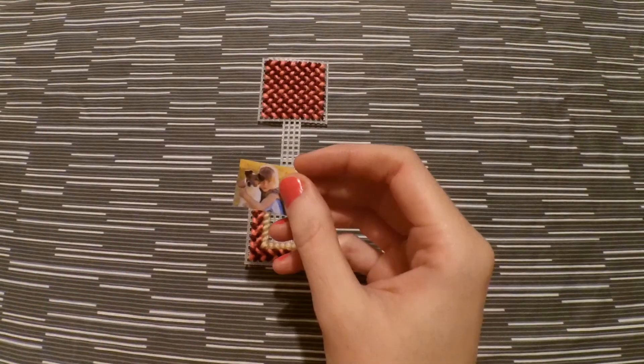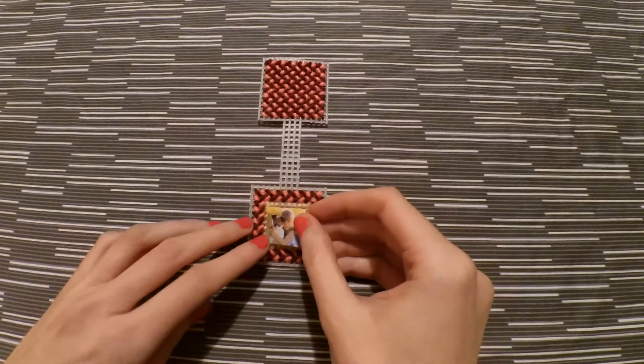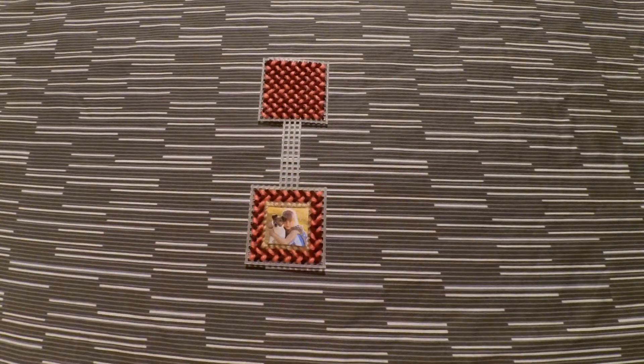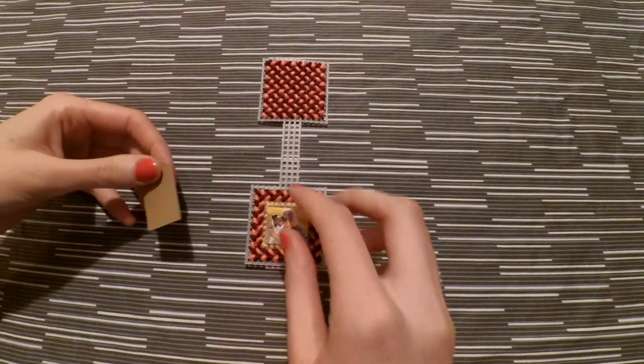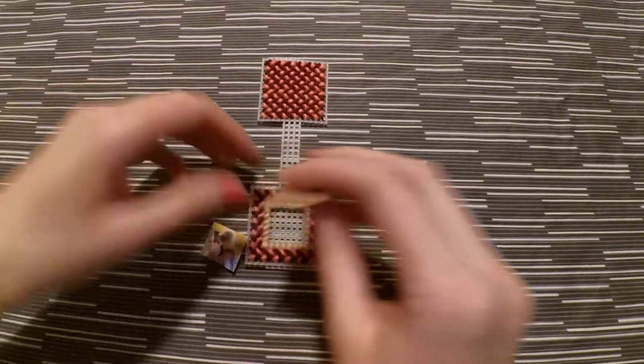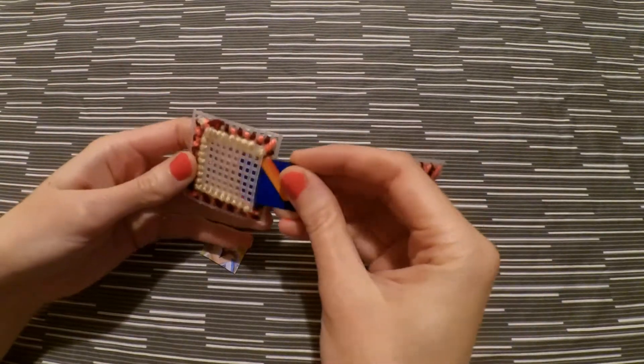So next you're going to take your picture and make sure that it's the right size and then you're going to take a little piece of cardboard and cut it up. It can be a cereal box or just anything you have at home and make sure that that fits sliding in the back before you stick your picture onto the cardboard.